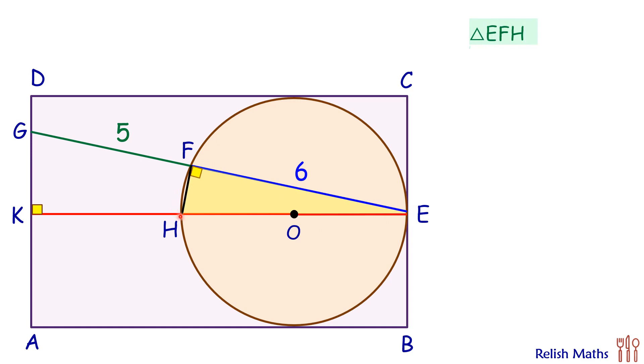Let's take triangle EFH and another triangle EKG. In these two triangles, angles K and F are 90 degrees, angle E is common, and thus by angle-angle similarity, these triangles are similar to each other.